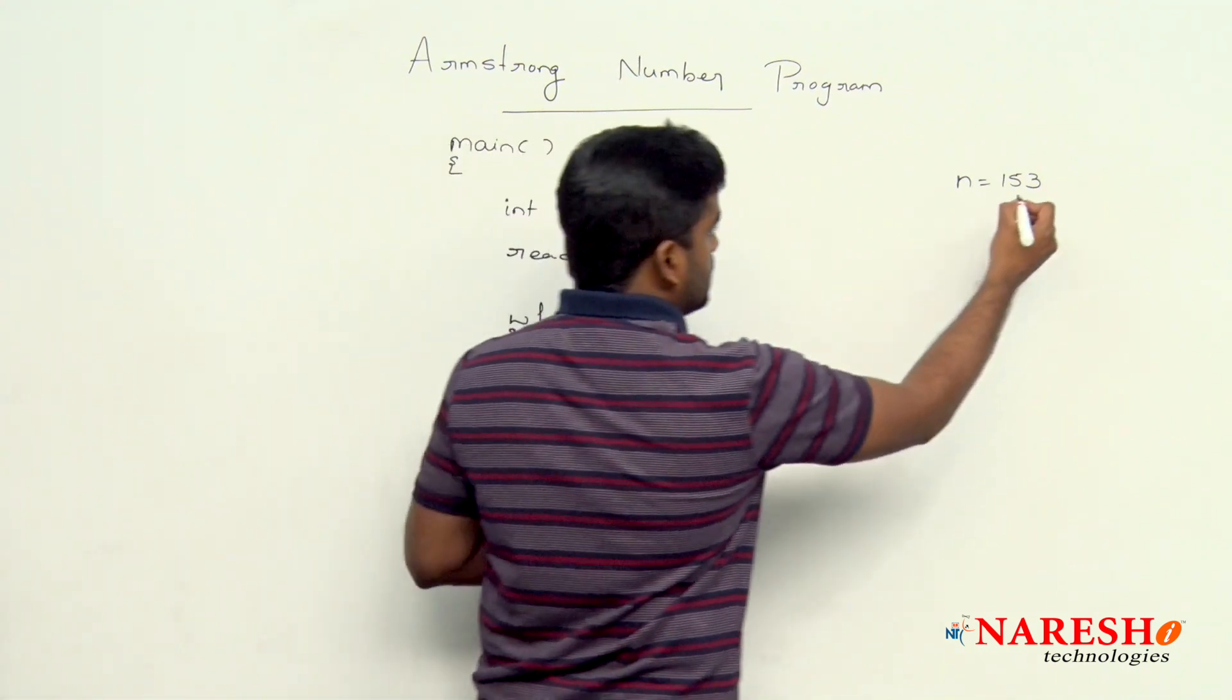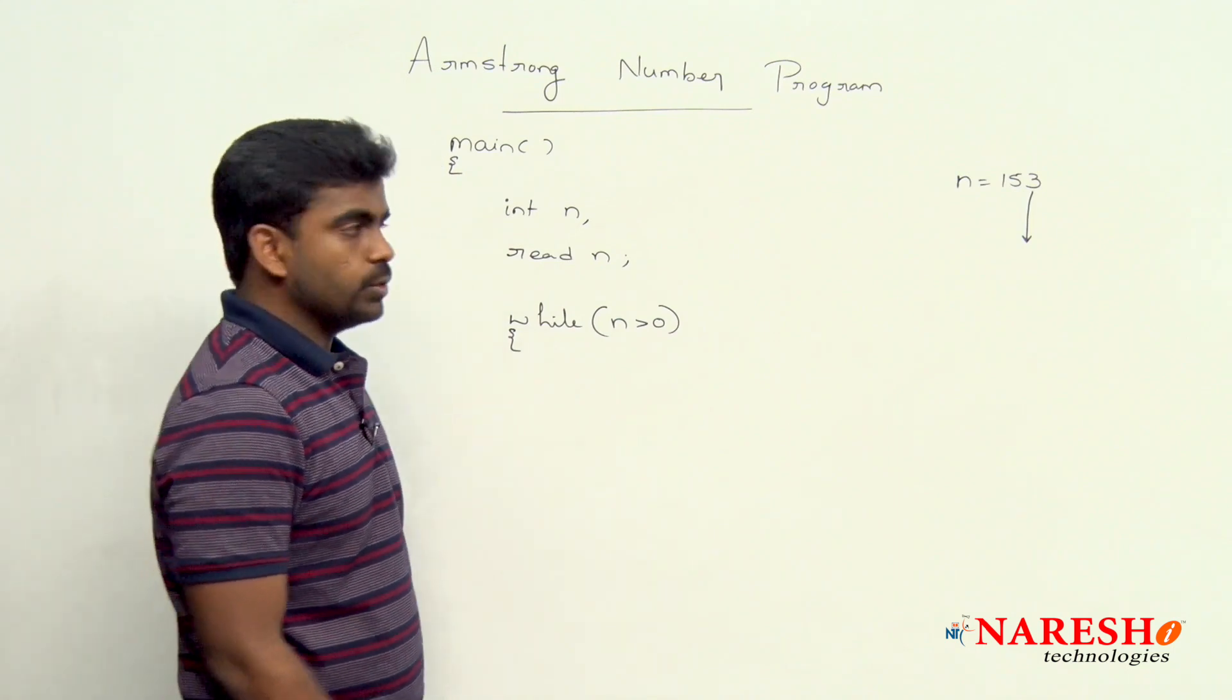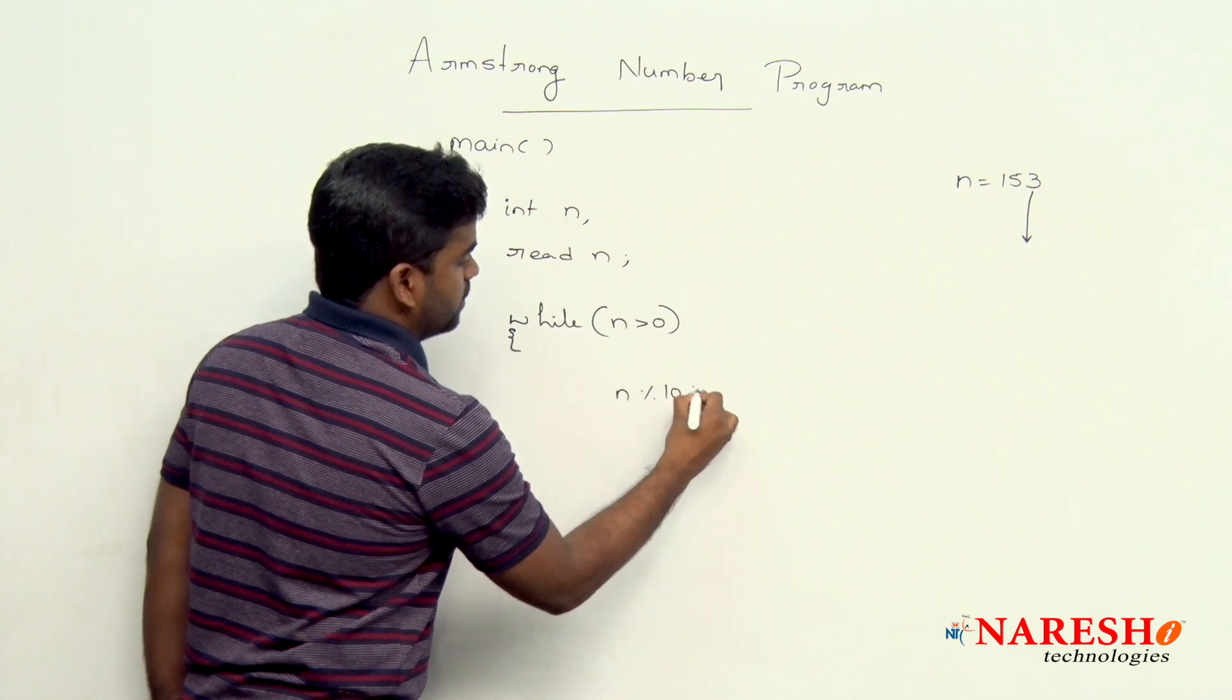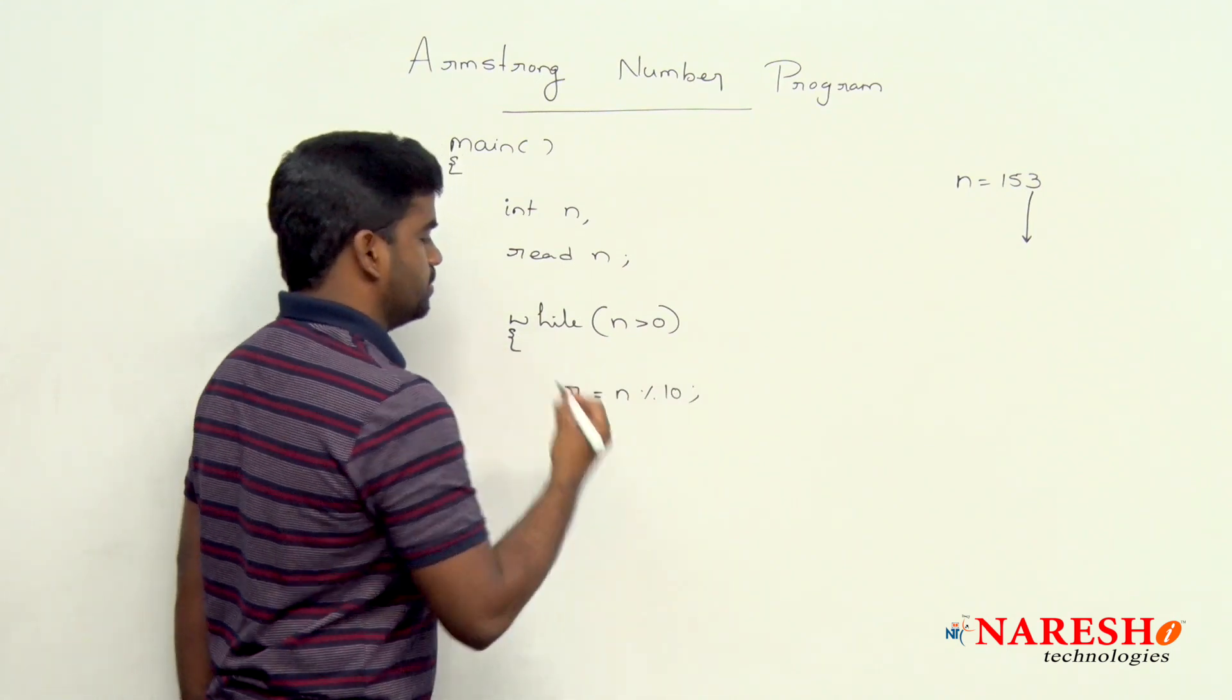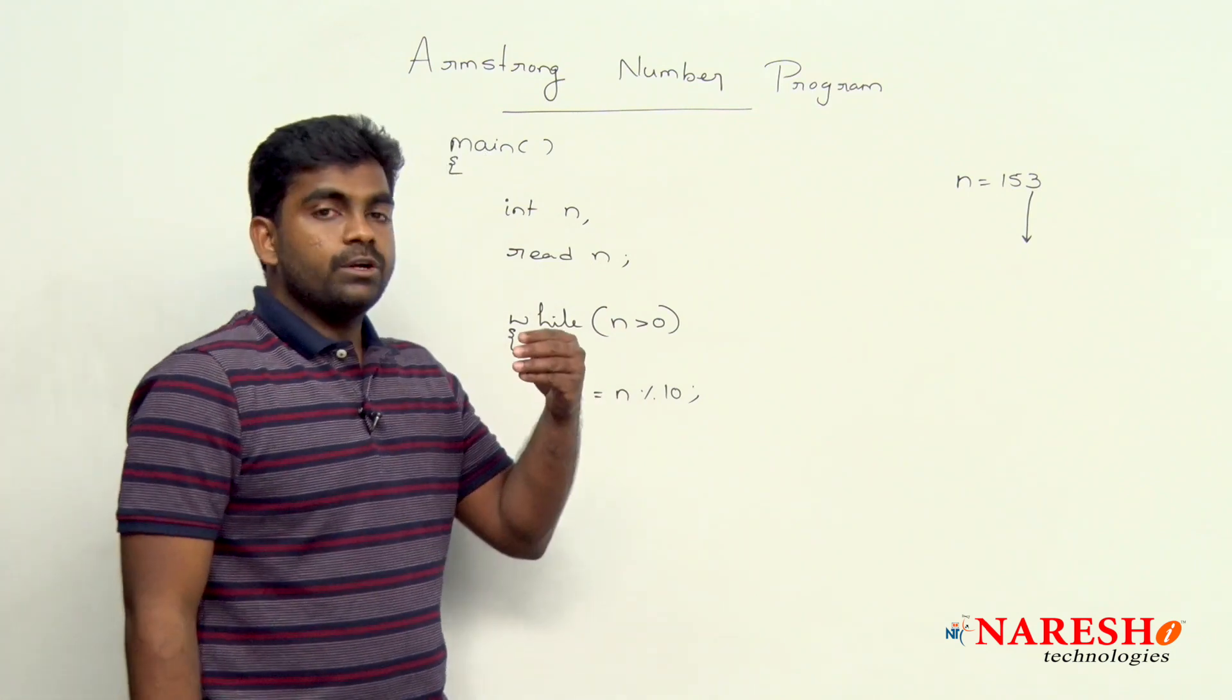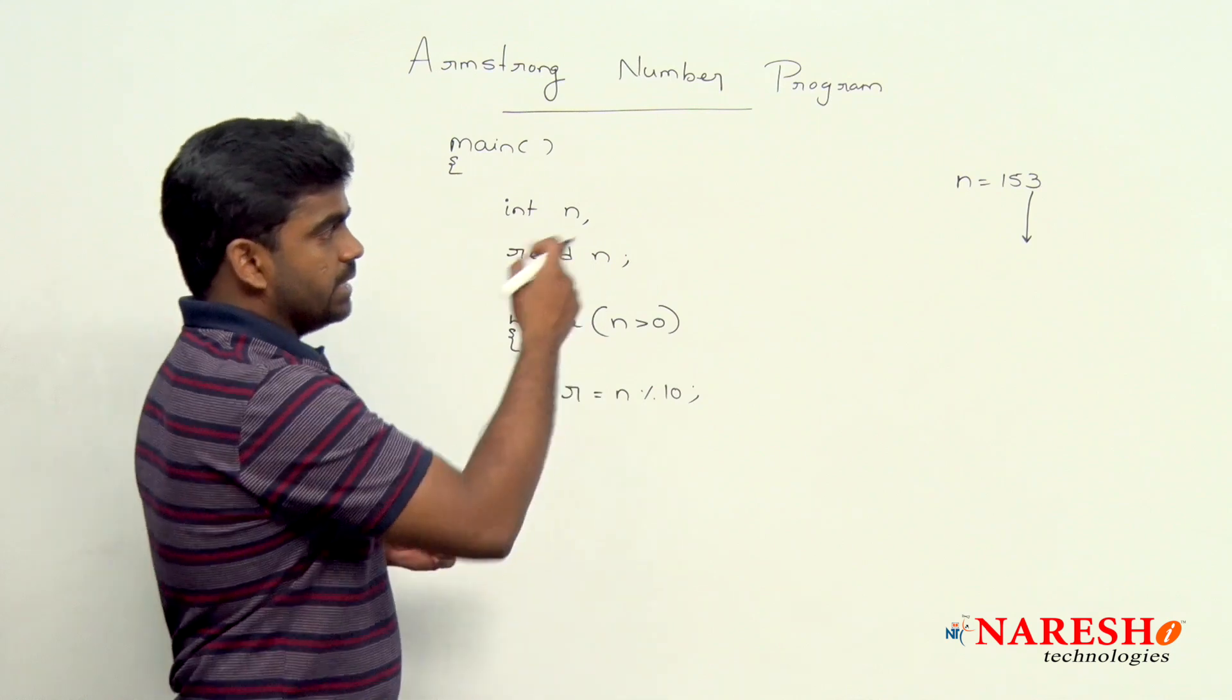First we are getting that last digit 3. How to get the last digit? We know that, just perform that remainder operation n mod 10, it will give that remainder. This remainder is 3. Now, we need to find out the cube operation for 3.